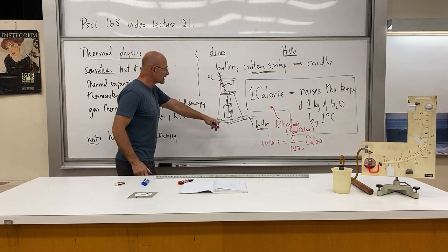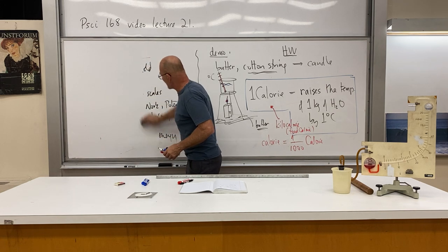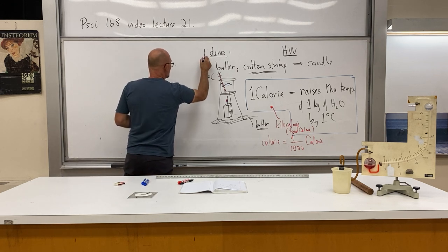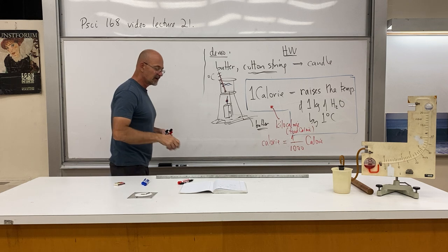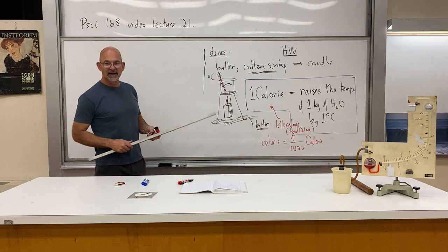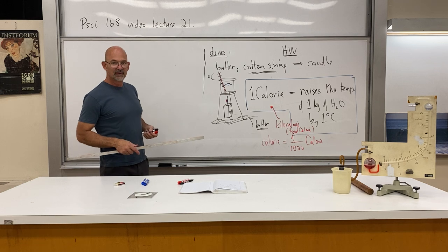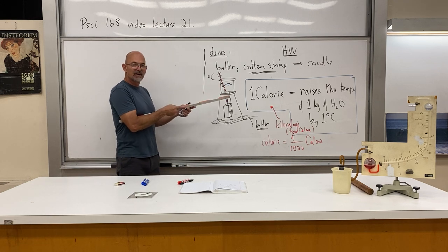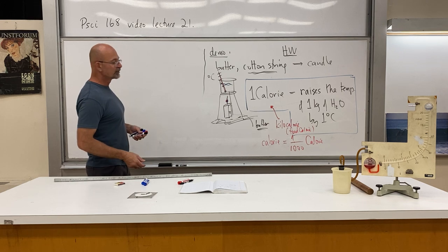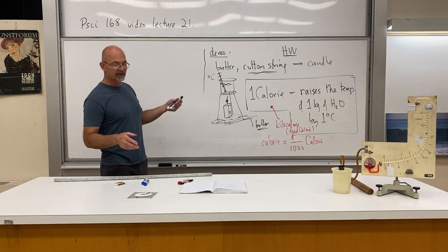This process of burning something and heating water gives an operational definition of how to find the calories of anything you want to know. You just burn it. Suppose you wanted to know the number of calories in a head of lettuce. Lettuce is mostly water. You'd have to dry the lettuce out until it's just fibery, maybe grind it down into a little powder. Then you would burn that powder that used to be lettuce. You'd see how much heat comes out, how much the temperature of water can be raised. That'll tell you the calories of that food. The same goes for everything.